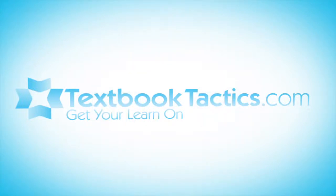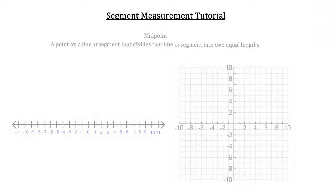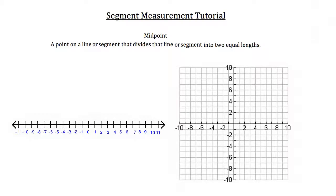This is the segment measurement tutorial. You all know what a segment is from our tutorial on points, lines, and planes. Here's some interesting information about segments and how to measure them. The first thing we want to discuss is the midpoint. The midpoint is a point on a line or segment that divides that line or segment into two equal lengths. Let me show you a couple of examples on the diagrams below.